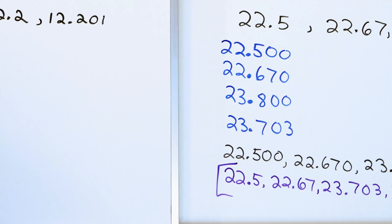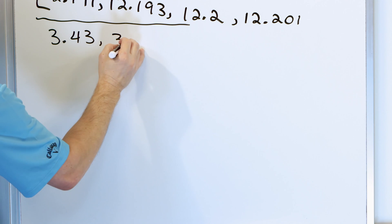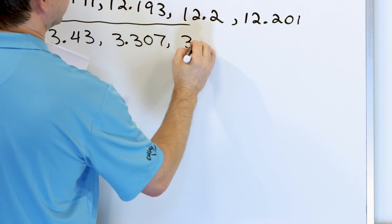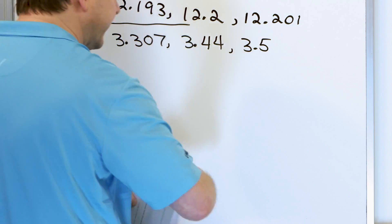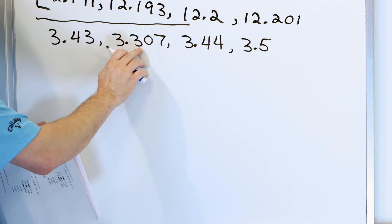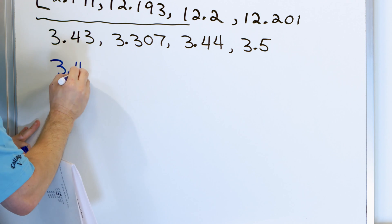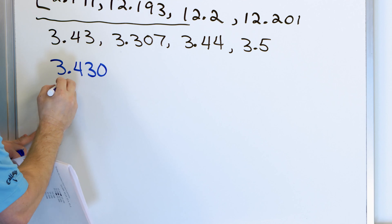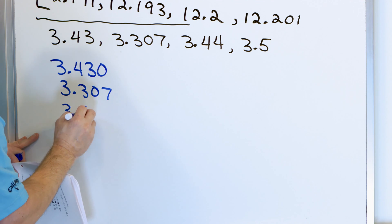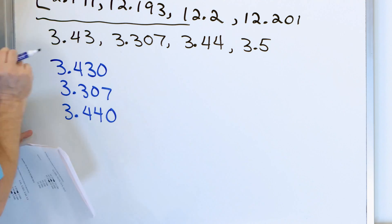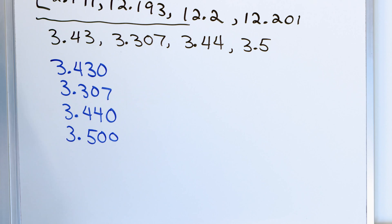This will be our very last problem. We're going to order the following numbers: 3.43, 3.307, 3.44, 3.5, and 3.45. We have three digits after the decimal in 3.307 — that's the biggest. So we want to make them all have three digits. We write: 3.430, then 3.307, then 3.440, then 3.500, and we drop two zeros for that last one.